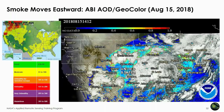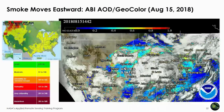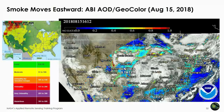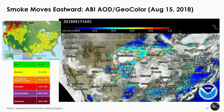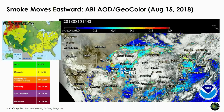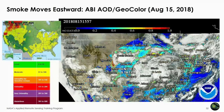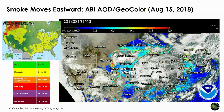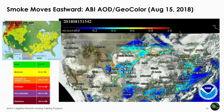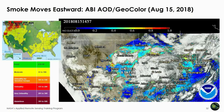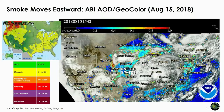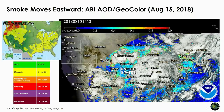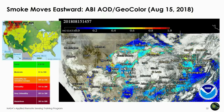Later that same week, by August 15th, the smoke had moved eastward and was impacting the mid-Atlantic region and parts of the southeastern US. The AOD animation shows yellow and some red colors moving into the New York, Philadelphia, Delaware, and New Jersey area.